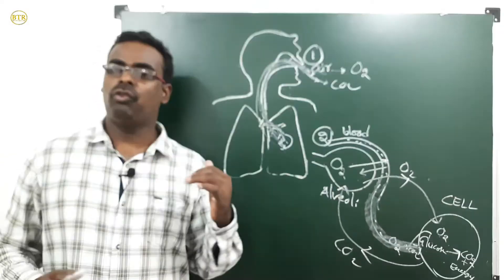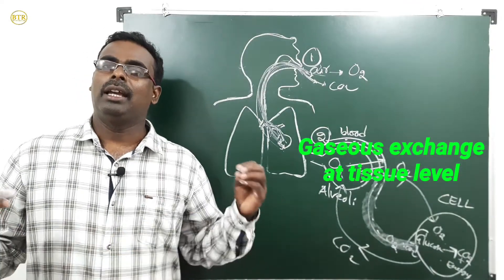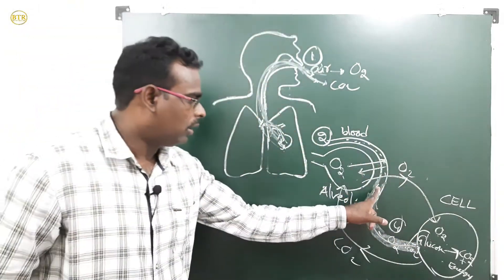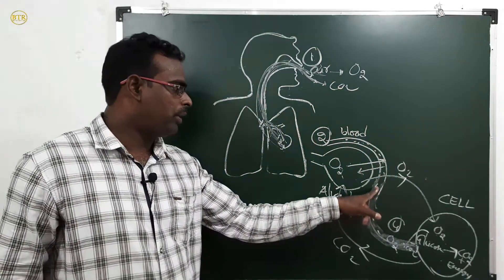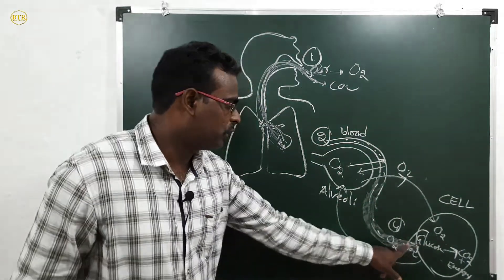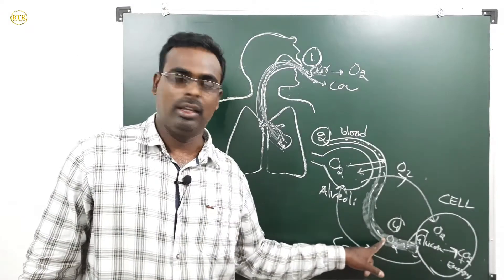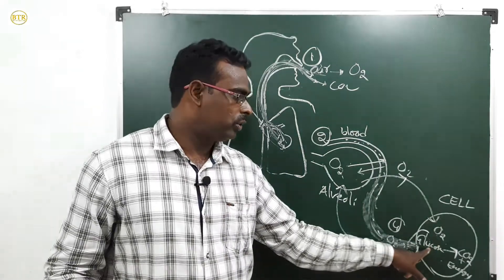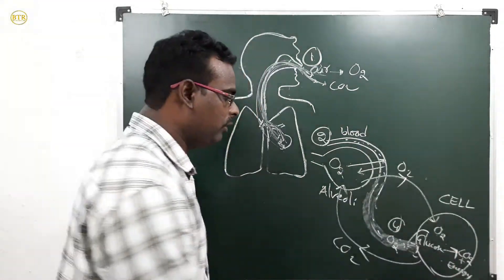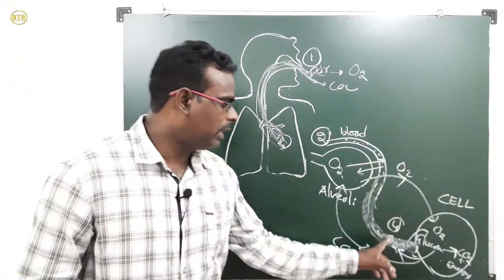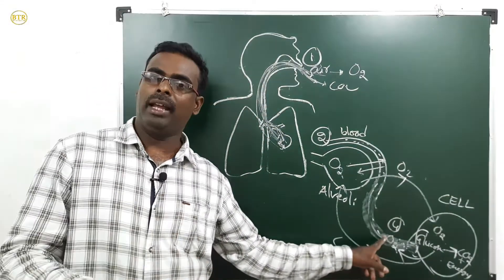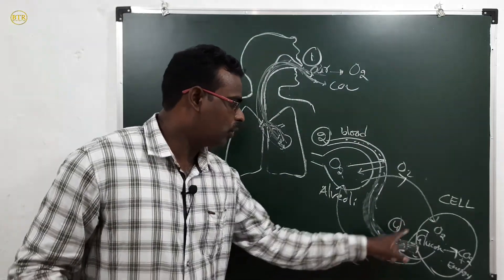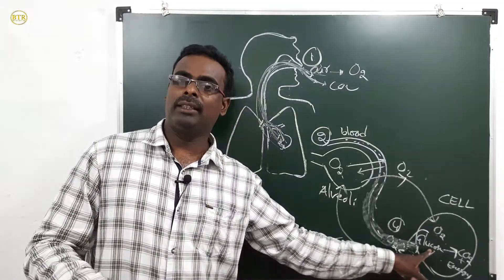The fourth step is gaseous exchange at tissue level. Oxygen is transported by the blood and reaches the cell. The cell takes up the oxygen, utilizes it to break down glucose, and produces carbon dioxide. The carbon dioxide then enters into the blood. So there is an exchange — oxygen moves from blood to cell, and carbon dioxide moves from cell to blood. That is the fourth step.